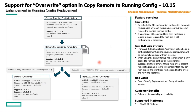When we use the new override option, you will see the difference — the remote config file will be applied and the existing configuration present in the switch will be replaced entirely. So you will see only the logging 10.1.2.